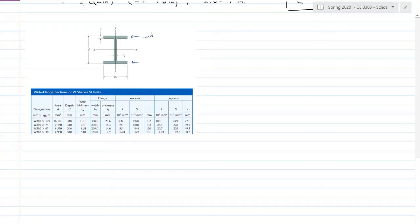So this is a wide flanged beam because you can see here the wide flanges. And you have the designation, so this is the depth of the wide flange beam, in this case it'd be 310 millimeters.